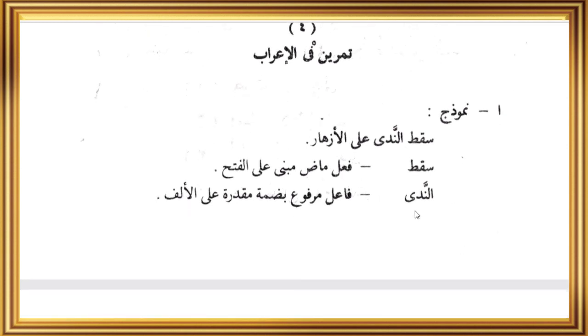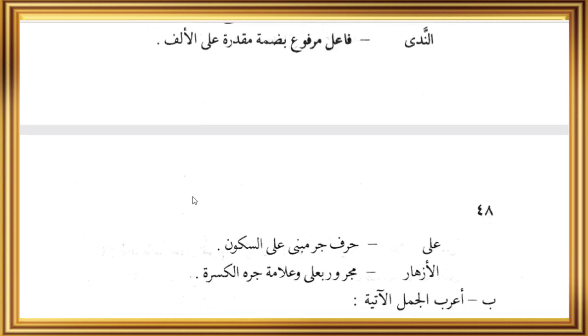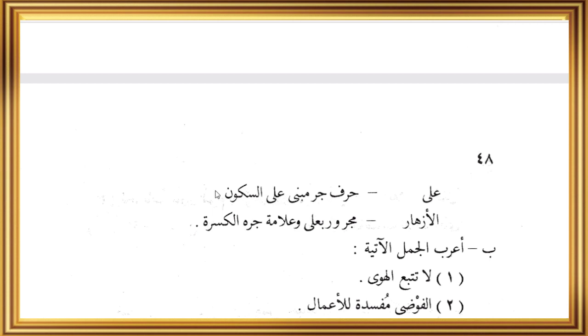Tamrin keempat adalah tamrin fil-i'rab. Contohnya: saktat-nada alal-azhar - embun itu jatuh di atas bunga-bunga. Sakatat fi'lun madhin mabniyun alal-fathih. An-nada fa'ilun marfu'un bidhammatin muqaddarah alal-alif - karena nada ini isim maqsur, maka marfu'nya dengan dhammah tapi dhammahnya muqaddarah, tersembunyi di atas alif lazimah. 'Ala harfu jarin mabniyun ala sukun. Al-azhar majrurun bi-'ala, wa'alammatu jarihil kasrah.